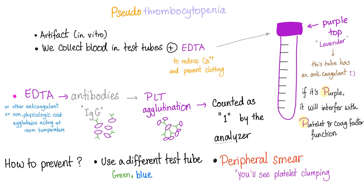When the test tube has EDTA as an anticoagulant — to reduce calcium and prevent clotting, because calcium is involved in coagulation, contraction of platelets, and release of granules — sometimes you have antibodies against it called IgG. They bind to the platelets and form a rosette formation. This satellite formation leads to platelet agglutination, but the machine counts this cluster as only one platelet instead of seven. That's why it's called a stupid analyzer machine.